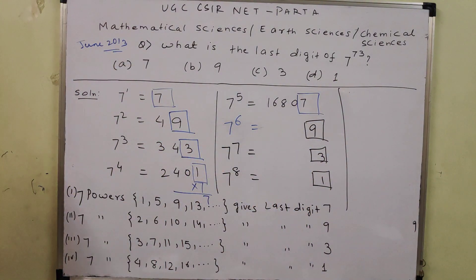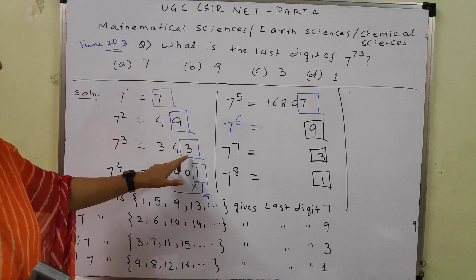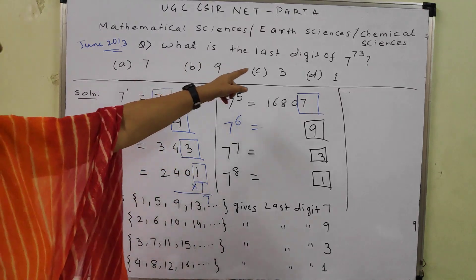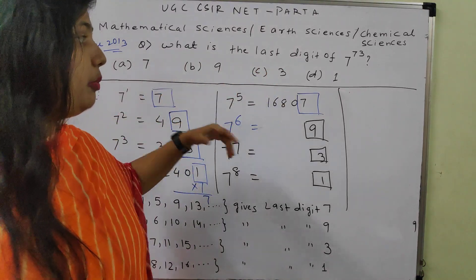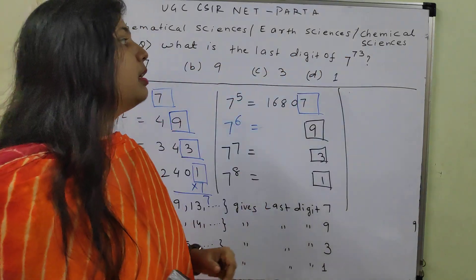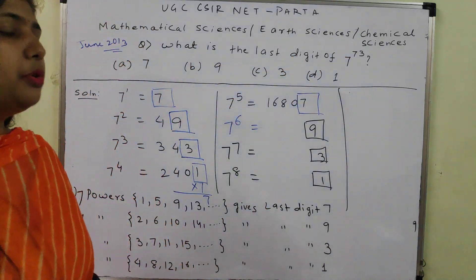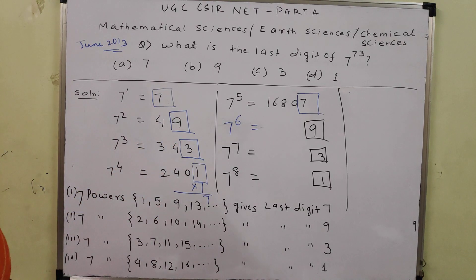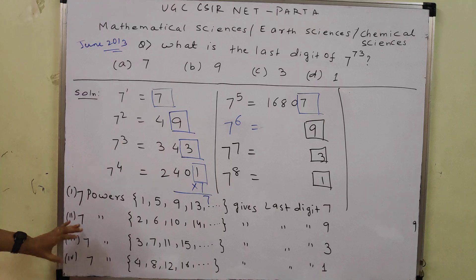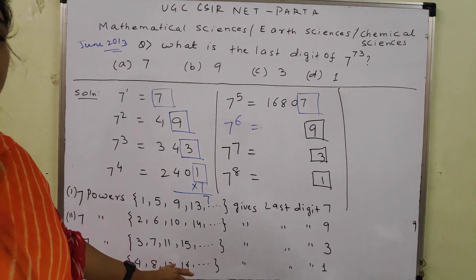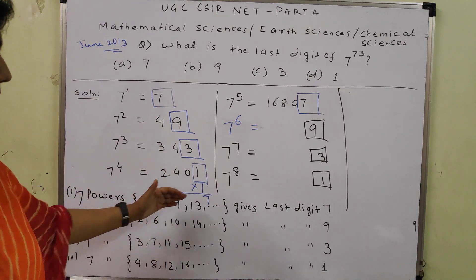The possible last digits cycle through 7, 9, 3, 1, which are exactly the four options given. To find the last digit of 7^73, we categorize powers of 7 into 4 sets based on the remainder when the exponent is divided by 4.